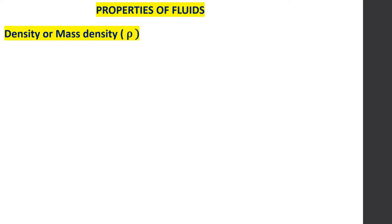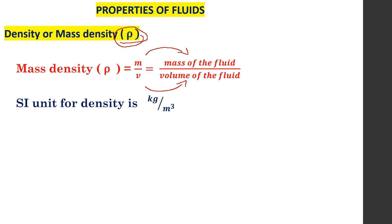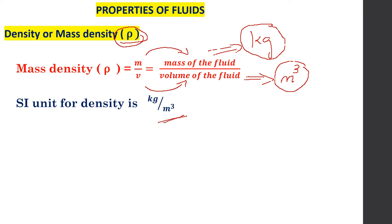The first property is density or mass density. It is represented by rho. Mass density rho is equal to M divided by V, where M is the mass of the fluid and V is the volume of the fluid. The SI unit for density is kilogram per meter cube, because mass is expressed in kilograms and volume is expressed in meter cube. So our SI unit is kilogram per meter cube.